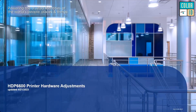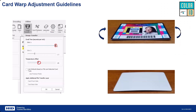Now we're going to get into some issues that can occur in the field — what the issues are and what we can do to adjust or fix them. The first one is card warping. Card warping typically happens with a single-sided printer because we're applying heat to transfer the film to the card. In HDP retransfer printers, the card will always tend to warp towards the printed side, especially if too much heat is applied.